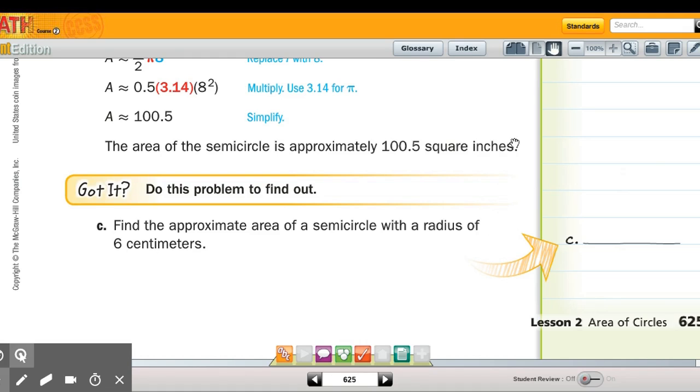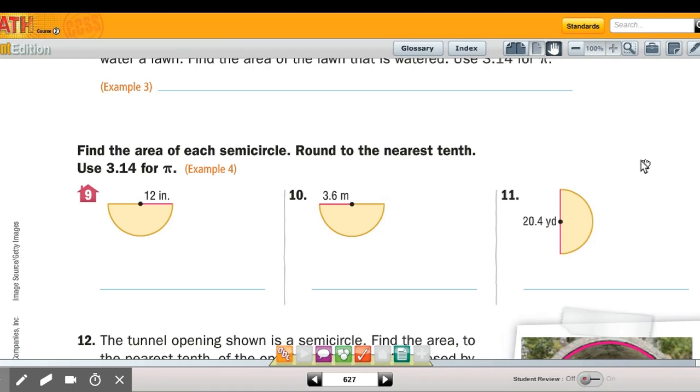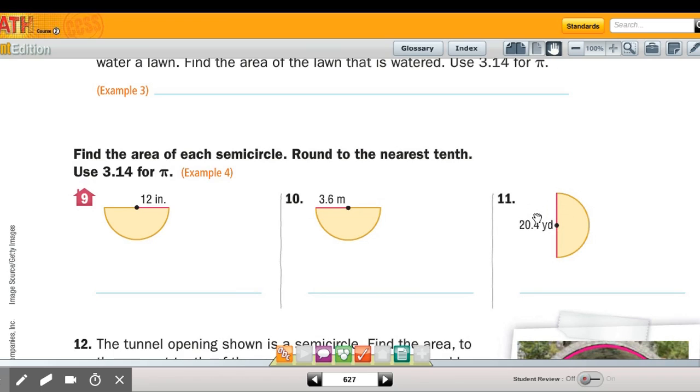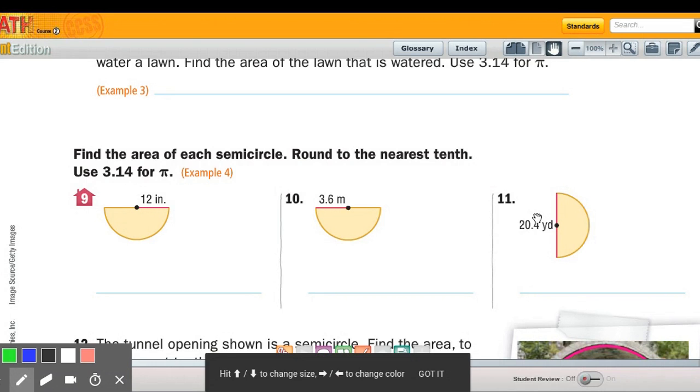They'll talk about if it's radius or diameter, just make sure you know what you're doing. So this one, 9, 10, 11 says semicircle, so again you got to make sure you're using the radius. These two are both the radius, this one they're showing you diameter.